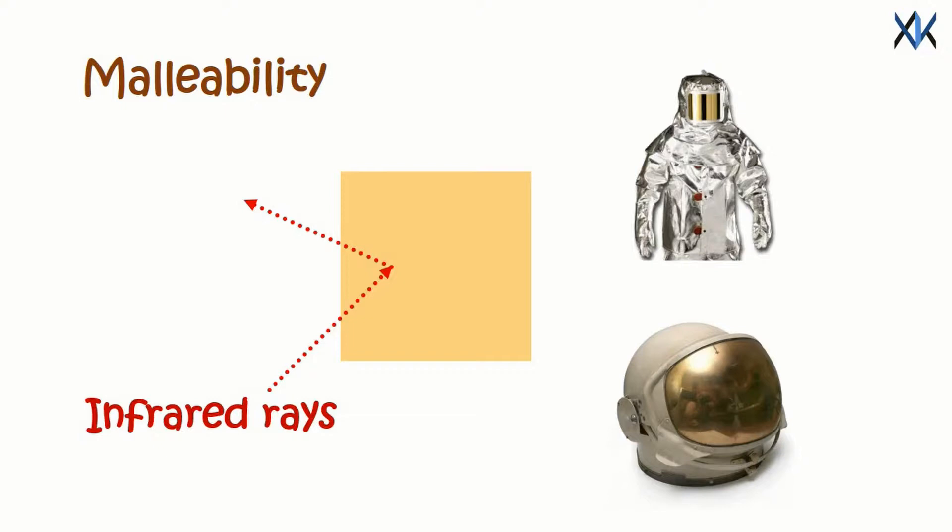Gold is the most malleable of all metals. A single gram can be beaten into a sheet of one square meter. Gold leaf can be beaten thin enough to become semi-transparent. Such semi-transparent sheets also strongly reflect infrared light, making them useful as infrared shields in visors of heat-resistant suits and in sun visors for space suits.